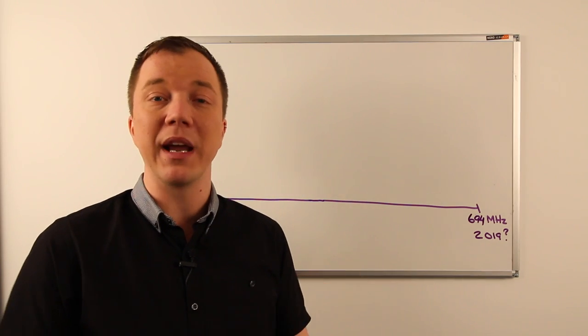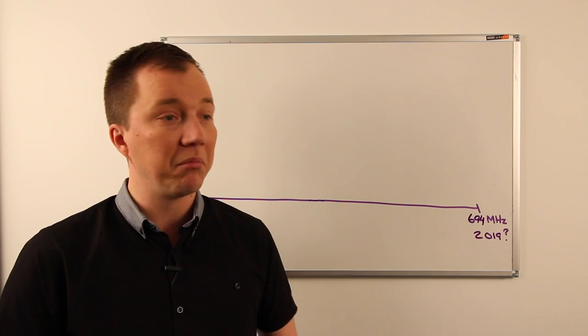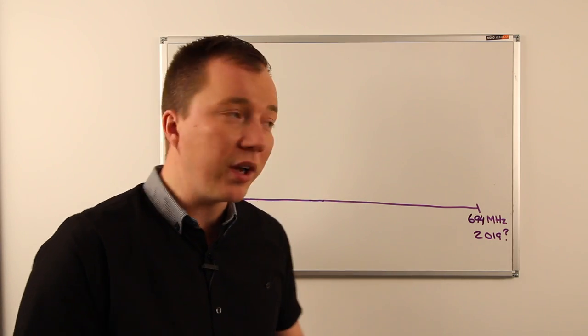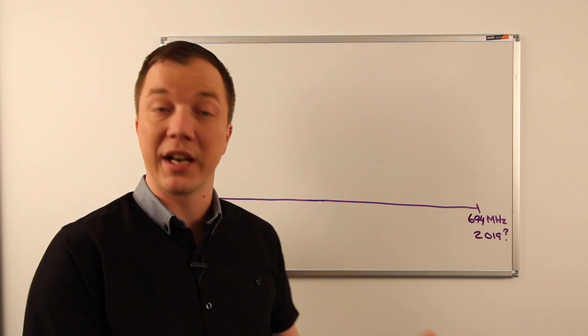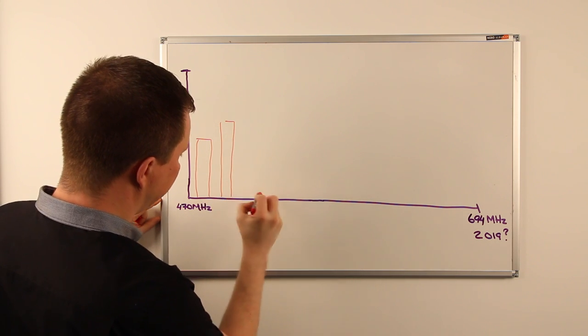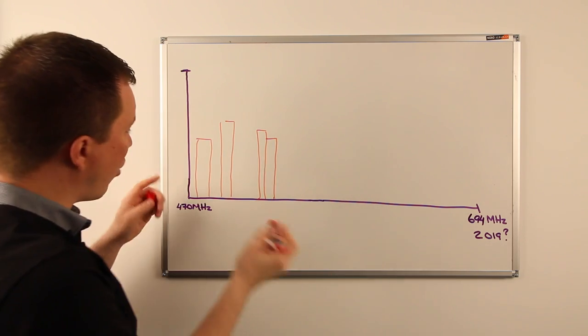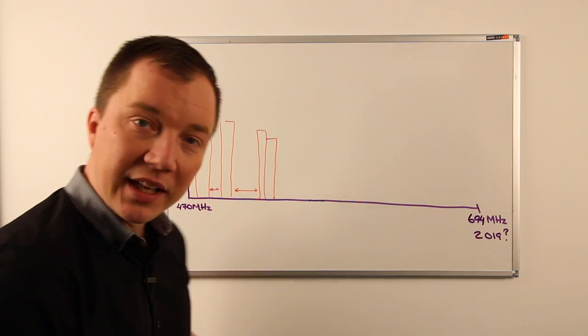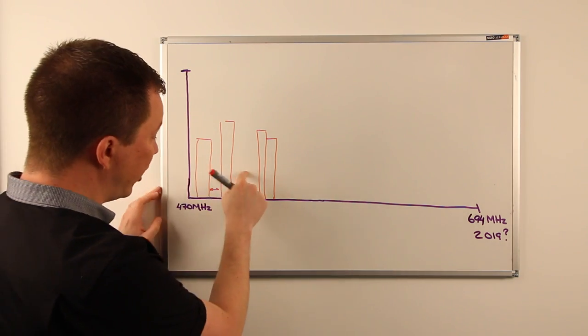So what is white space, let alone white space devices? White space is terminology that's been used around the planet for decades to describe spectrum that is not used. The UHF bands we as PMSE share with broadcasters—I'll draw a few DTV channels here. White space would be any of this spectrum that is unused between these TV channels. For many years, PMSE users of radio microphones and in-ears have made very good use of this so-called white space, and we've always operated a tier below broadcasters.